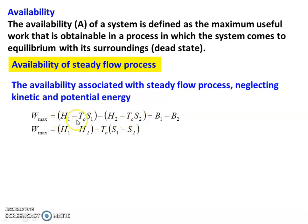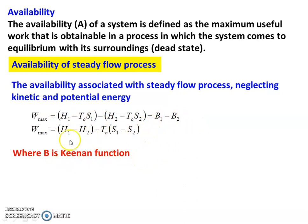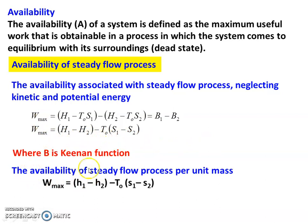The first term (H1 − T0·S1) is called B1, and the second term (H2 − T0·S2) is called B2. B is the Kenan function. Rearranging, W_max = (H1 − H2) − T0·(S1 − S2). For the availability of a steady flow process per unit mass, W_max = (h1 − h2) − T0·(s1 − s2), where h is specific enthalpy and s is specific entropy. This equation is used for solving problems on steady flow process availability.